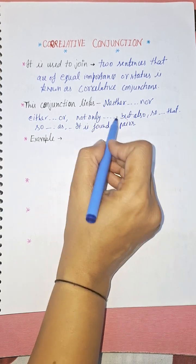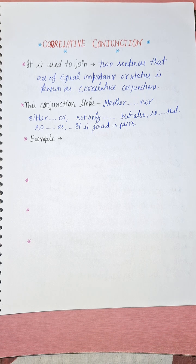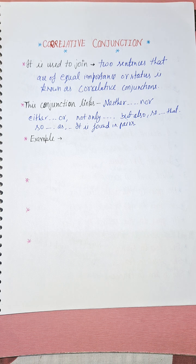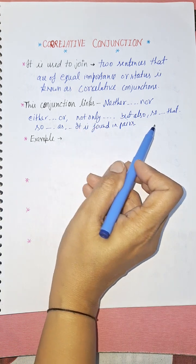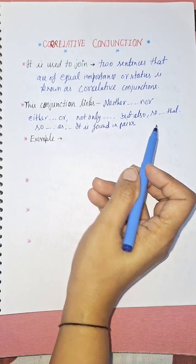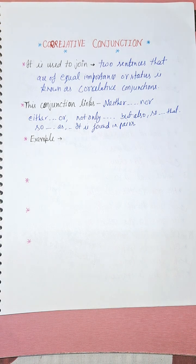For example, with 'not only...but also': She is not only intelligent but also beautiful. In such a way you can use correlative conjunctions.